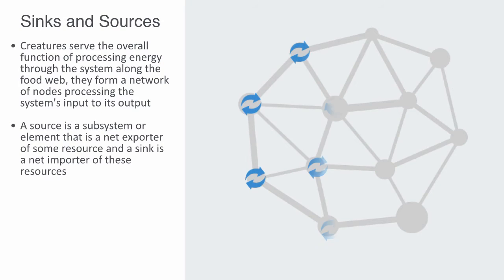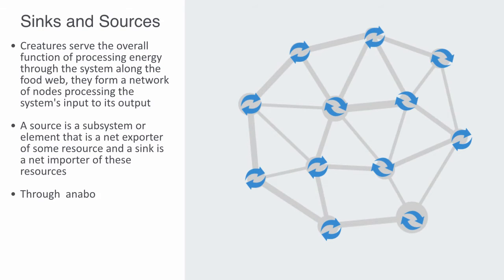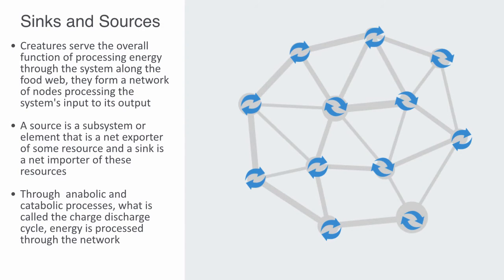Through anabolic and catabolic processes — what is called the charge and discharge cycle — energy is processed through the network. Anabolism, which is the charge phase, is the incorporation of high-quality energy into biochemical structures, which keeps the system far from thermodynamic equilibrium. Catabolism is the discharge phase, corresponding to the deterioration of the structure, with the release of accumulated chemical energy and its transformation into work and heat.